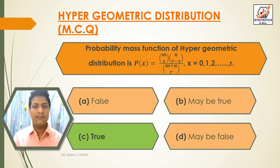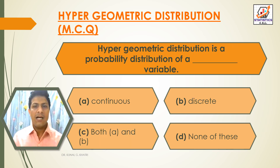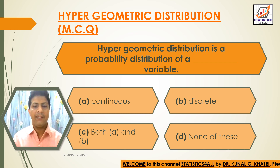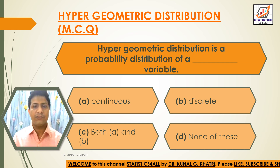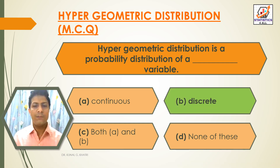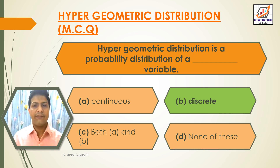Next question: Hypergeometric distribution is a probability distribution of a ___ variable. Option A: Continuous, Option B: Discrete, Option C: Both A and B, Option D: None of these. The answer is Option B — Discrete variable. Hypergeometric distribution is a probability distribution of a discrete variable.